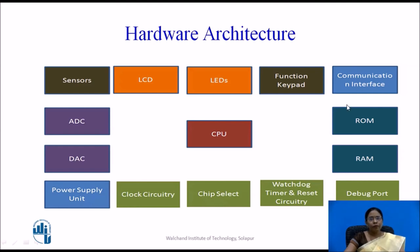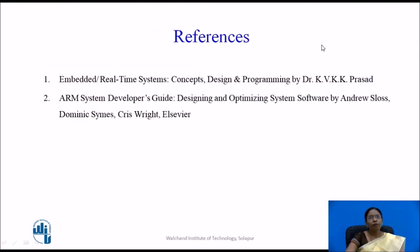The communication interface allows the processor to communicate with the outside world. Communication interfaces include RS-232, RS-422, Bluetooth, Wi-Fi, and Ethernet. The references used are K.V.K.K. Prasad's 'Embedded Real Time Systems' and 'ARM System Developer Guide' by Andrew Schloss.